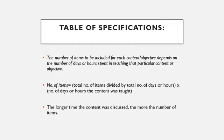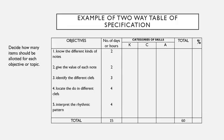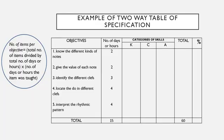The number of items to be included for each content or objective depends on the number of days or hours spent in teaching that particular content or objective. The longer the content was discussed, the more items should be for that particular content. For objective number one, it was discussed in two days; objective number two, two days; objective number three, three days; objective number four, four days; and objective number five, four days. The total of these hours is 15. You can have number of days or number of hours.